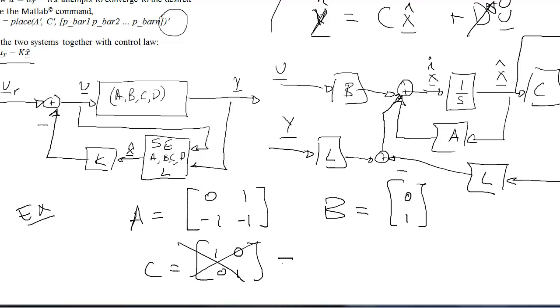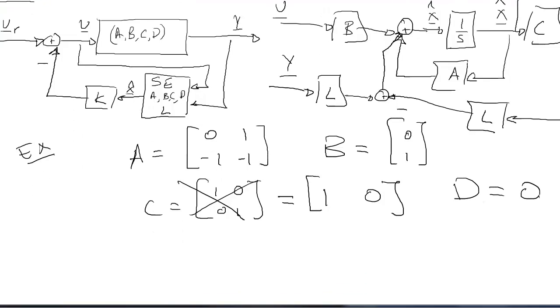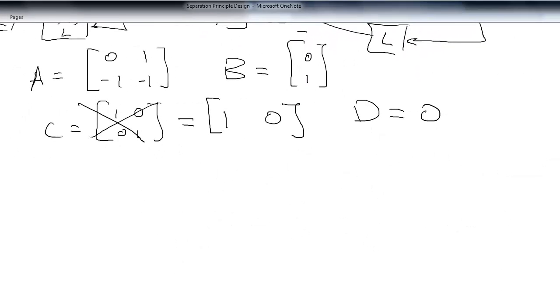But in this case, we're going to say that we don't have full state, and we're only going to measure the position. So in this case, C is [1, 0] and D is 0. And we had some performance requirements based on wanting some eigenvalues for this system.